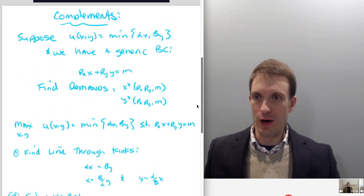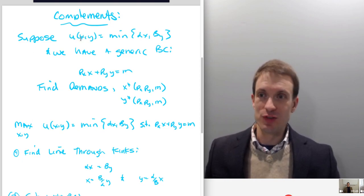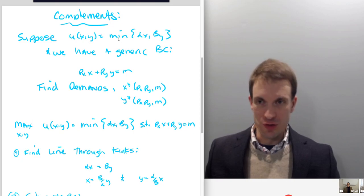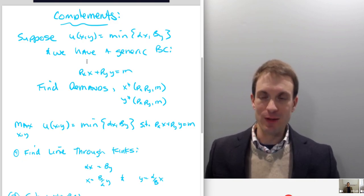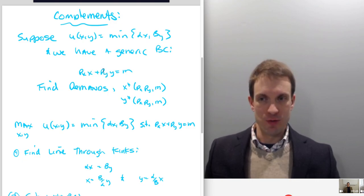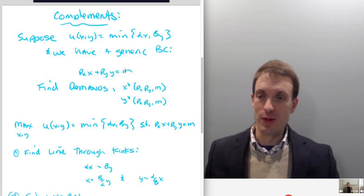Assuming our consumer has complements preferences, this means the utility function is going to be of this form. We're supposing utility over the consumption of good x and consumption of good y is just going to be whatever is the smaller of alpha times x and beta times y. We'll assume a generic budget constraint: the price of x times the consumption of x plus the price of y times the consumption of y — that's your expenditure on x plus your expenditure on good y — and your total expenditure equals your income if we're on the budget line.